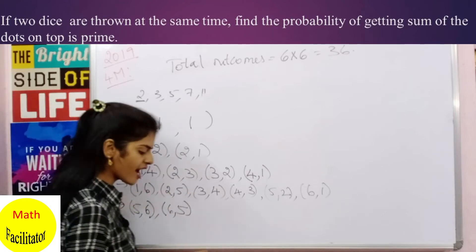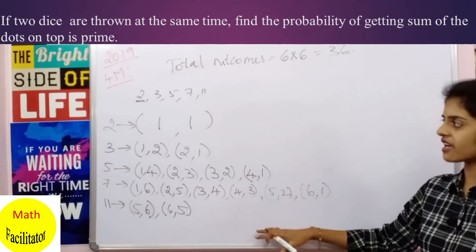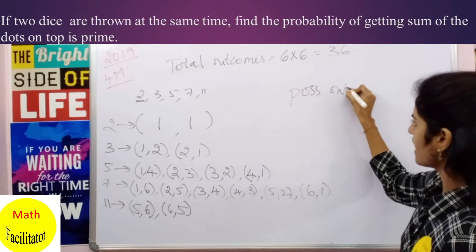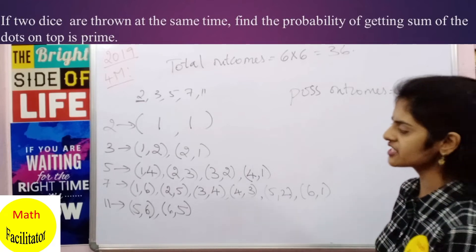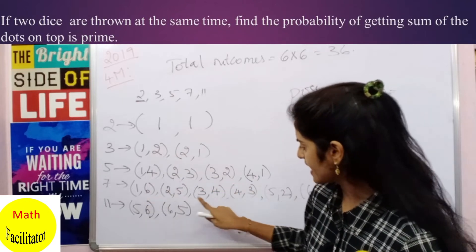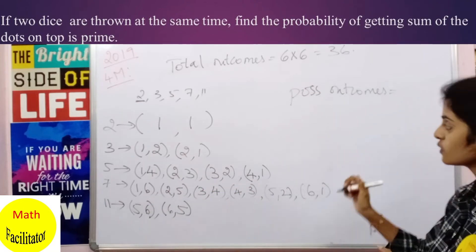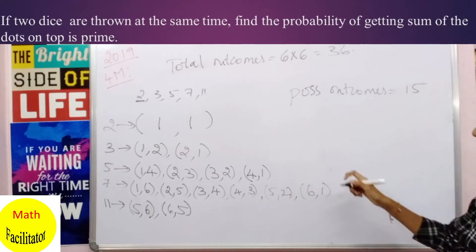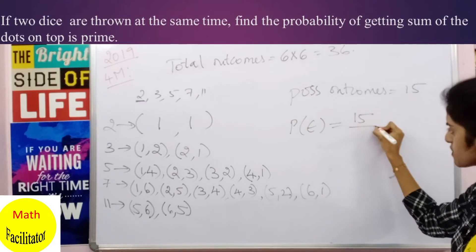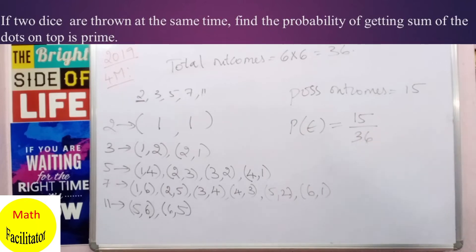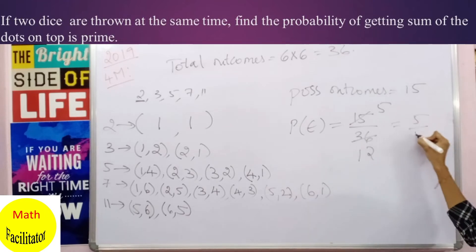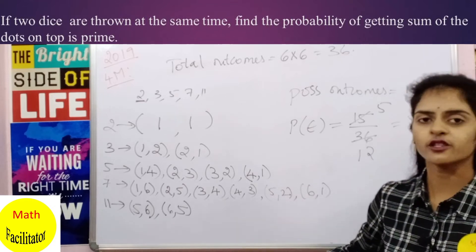All these ordered pairs together are the possible outcomes. Counting them: 1 (for sum 2) + 2 (for sum 3) + 4 (for sum 5) + 6 (for sum 7) + 2 (for sum 11) = 15 possible outcomes. The probability is 15/36, which simplifies to 5/12.